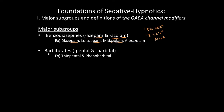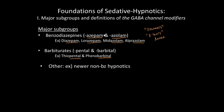For the barbiturates, look for the suffixes -pental or -barbital. Two commonly prescribed barbiturates are thiopental and phenobarbital. These are the major subgroups, and in subsequent lectures we'll talk about newer hypnotics, including non-benzodiazepine agents — such as melatonin agonists and drugs that work on serotonin receptors. But for now, benzodiazepines and barbiturates are the main two subgroups you should know.